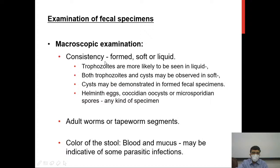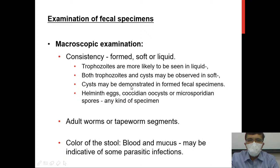When examining faecal specimens, macroscopic examination looks at different aspects including consistency. Whether the stool is formed, soft, or liquid provides important diagnostic clues. In a liquid specimen representing an acute process, you are more likely to find trophozoites. In a soft sample, you may find both trophozoites and cysts. In a formed faecal specimen, cysts are more likely to be demonstrated.